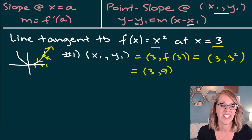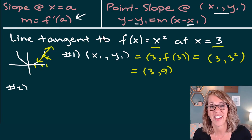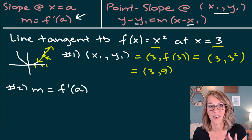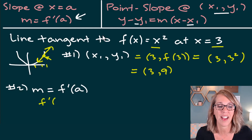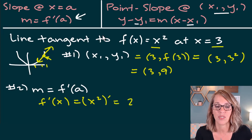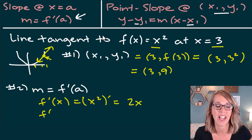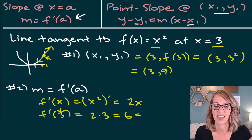Step two is to find the slope using the derivative. The slope equals the derivative of my function evaluated at the point. So f'(x) = 2x for x². This gives me the slope at any point, but I want it at x = 3, so f'(3) = 2 × 3 = 6. So m = 6.